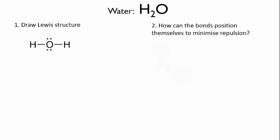Now let's look at water. Here's the Lewis structure, and again we ask, how can the bonds arrange themselves? Having just looked at ammonia, you may have an inkling of what I'm going to suggest here. Try pausing the video and drawing it out. Again, we have four electron groups around the central atom, only this time it's two bonds and two lone pairs.